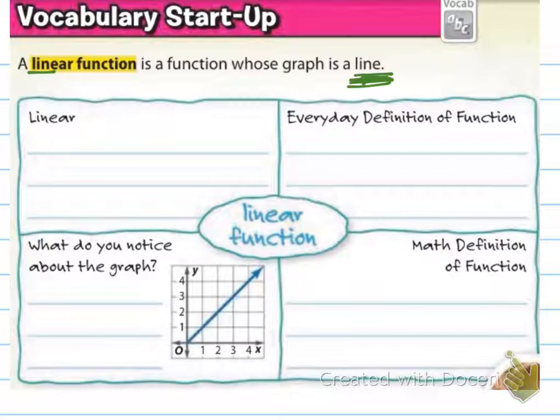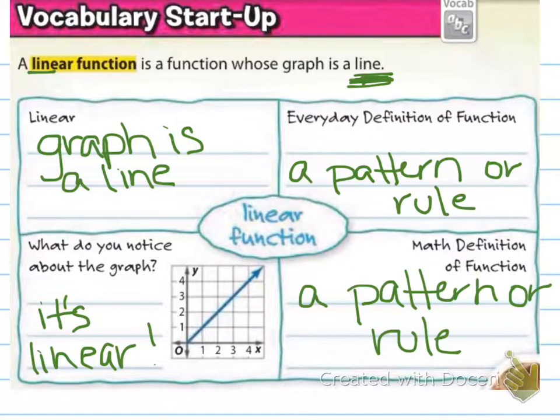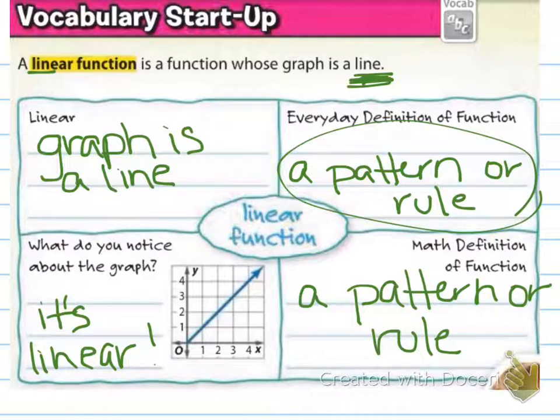I'd like for you to fill in this graphic organizer, and I'll come back. Pause now. All right, so linear means the graph is a line. Everyday definition for function, well, I'm a math person, so my everyday definition for function is a pattern or rule, which is also the math definition. What do you notice about the graph? Hopefully you notice that it's a line. It's linear.